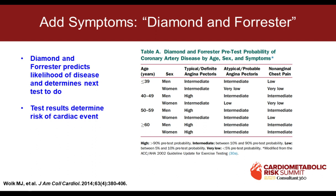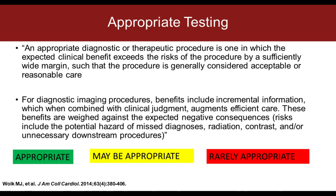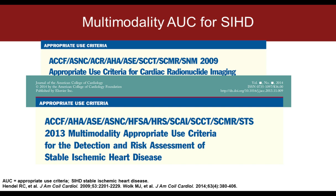Once you decide to do a test, you need to decide whether it's appropriate. These appropriate use criteria were meant to help the clinician decide what to do — for a given patient in a given clinical scenario, when will this test give more information than cause harm? Harm can mean leading to another test with complications, or missing a diagnosis. Things are categorized as appropriate, maybe appropriate, and rarely appropriate. We've had a variety of multimodality criteria, and it exists for every cardiac procedure and diagnostic test.